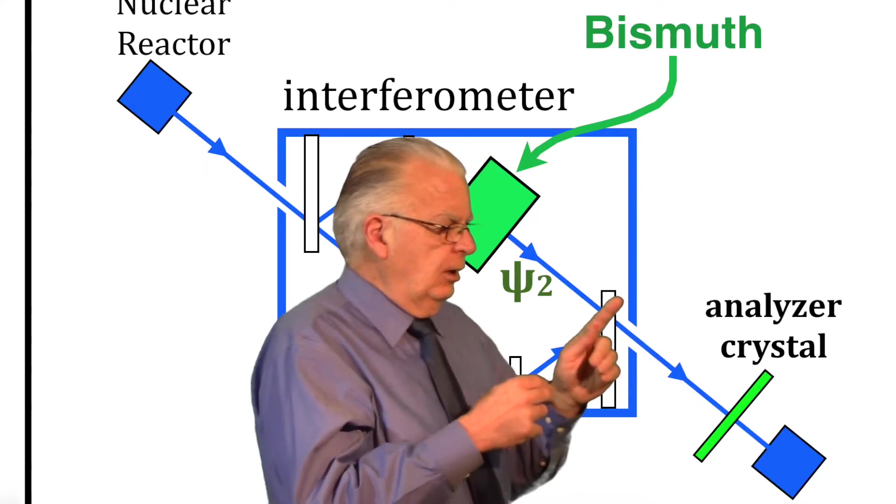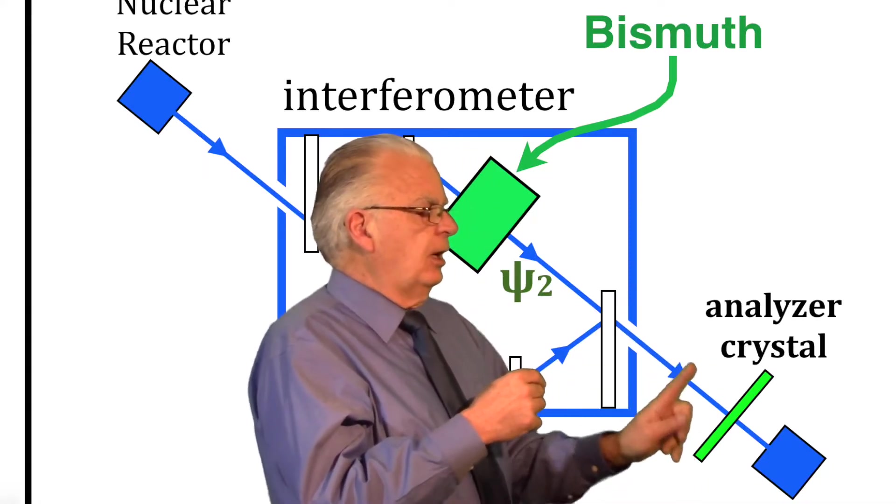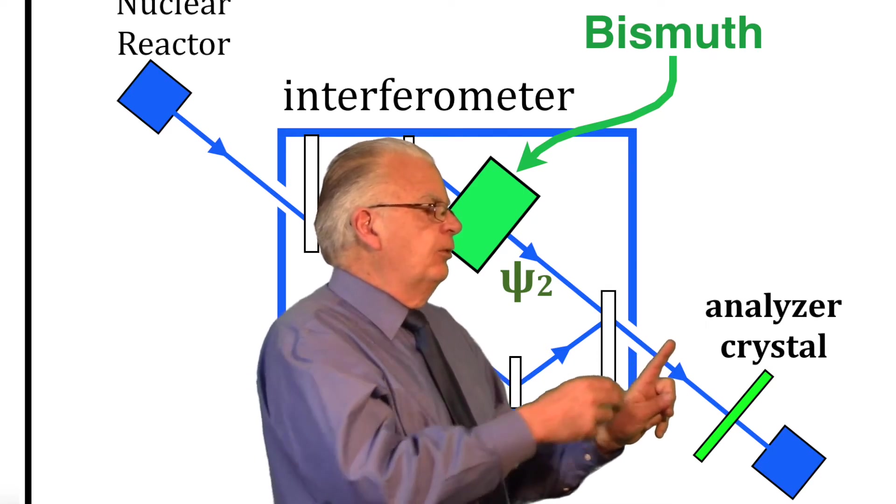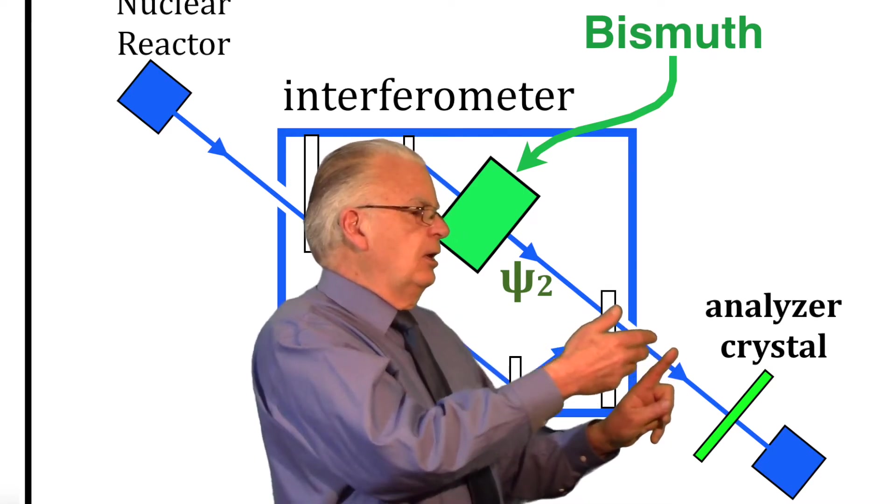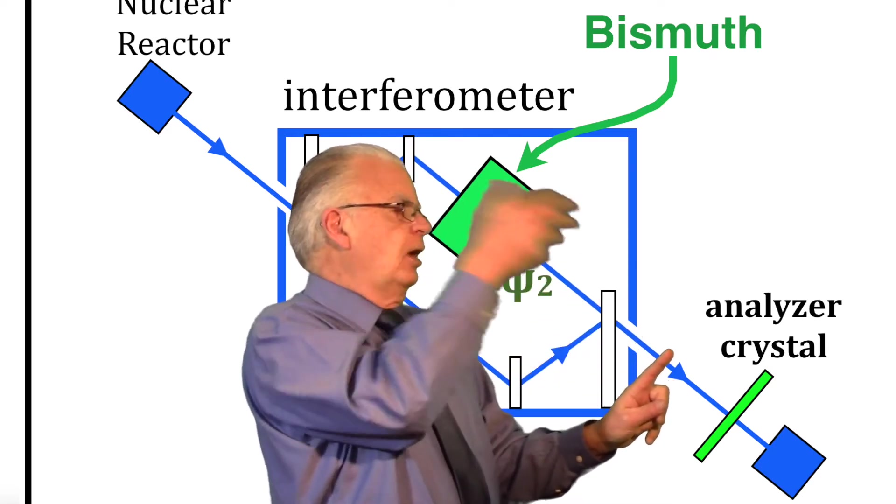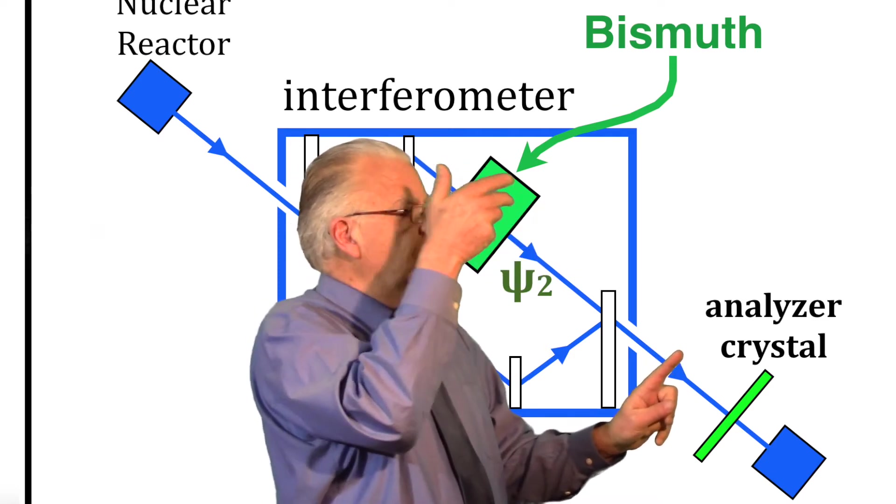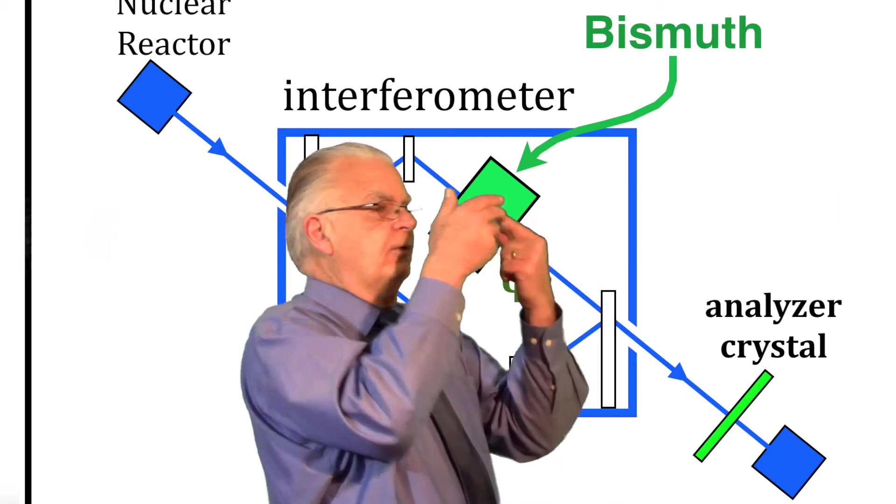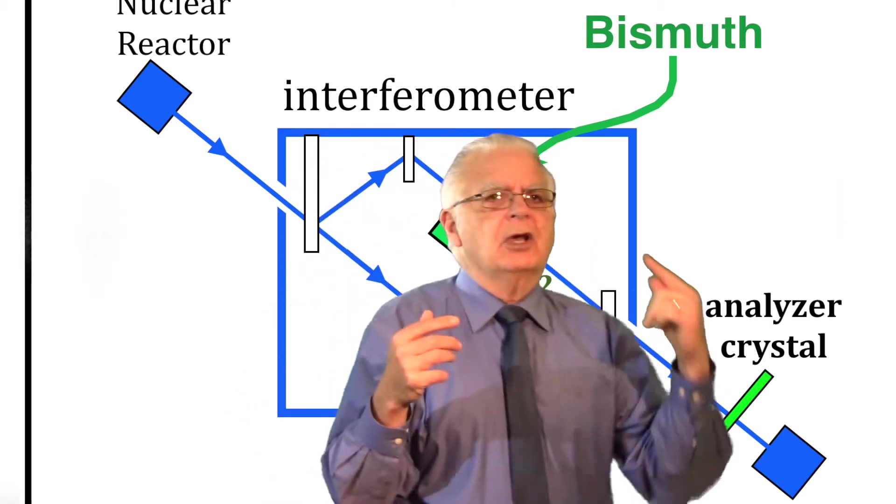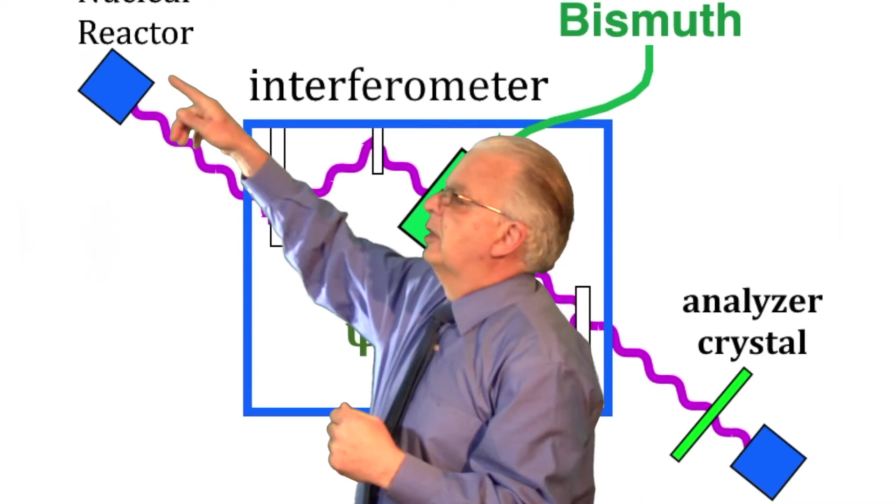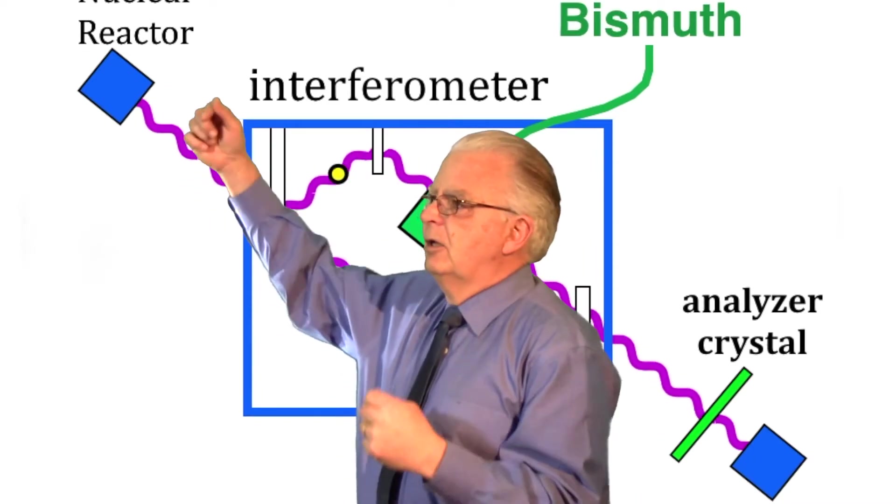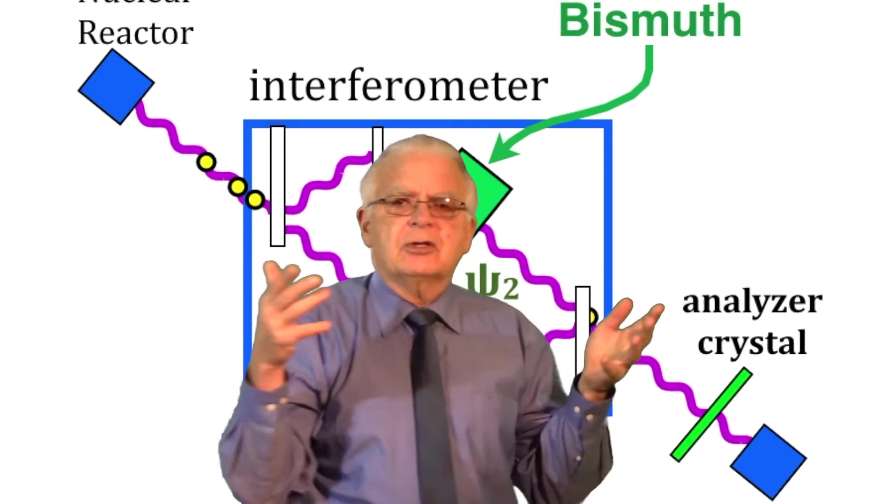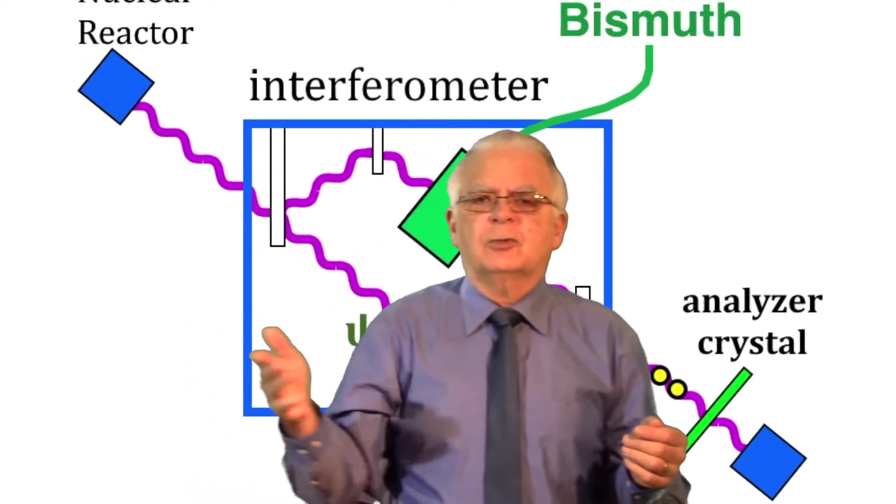We would say that if the presence or absence of an analyzer crystal down here profoundly influences and creates interference upstream inside the interferometer, then the analyzer crystal must be upstream from the interference. So the waves are going this way up into the nuclear reactor, and from time to time a neutron is following them backwards. That explains the data. That explains the entire experiment.